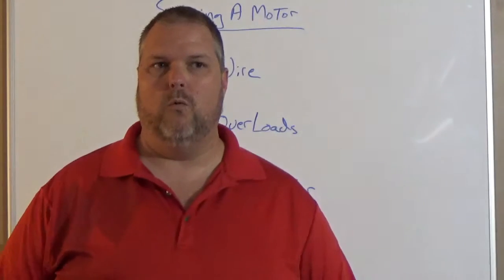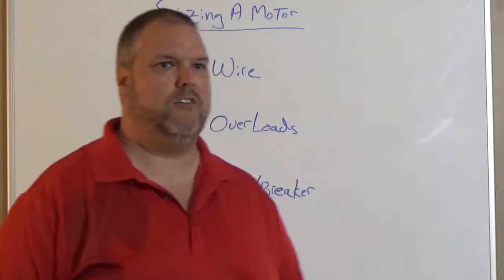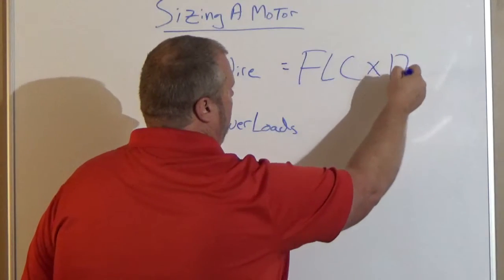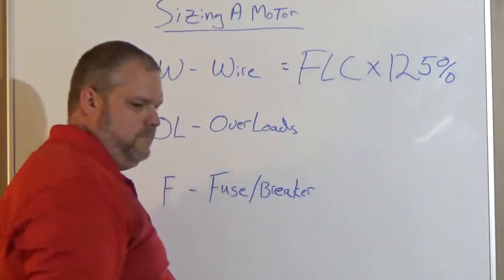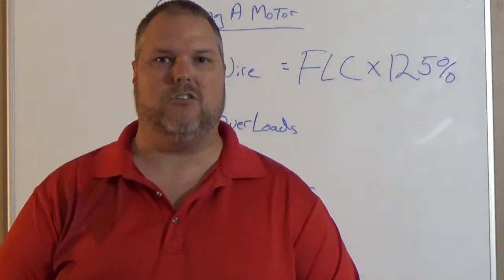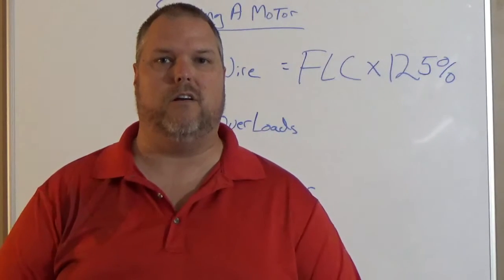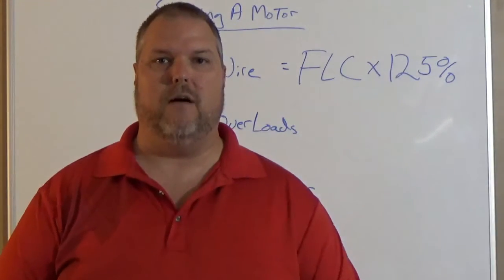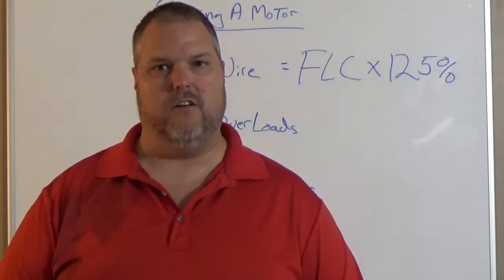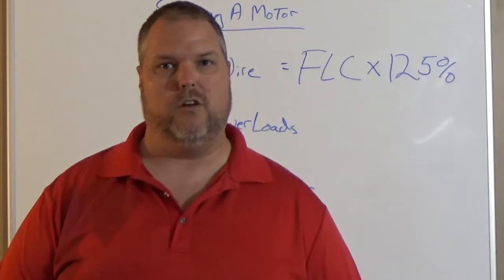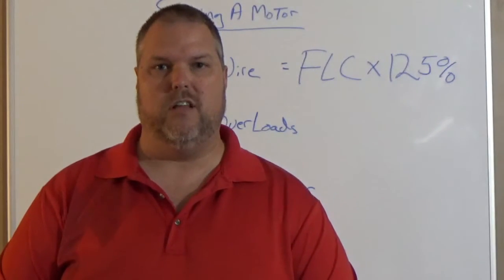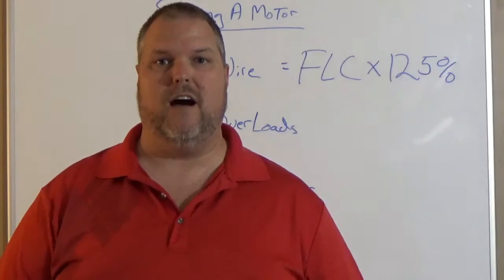We're going to size conductors. We're going to take what's called the FLC and multiply it by 125%. The FLC stands for full load current. I actually worked with somebody who made it easier by calling it the full load code. Makes sense - if I'm finding the FLC, where would I find it? I would find the FLC in the code book. So the full load current is found in the code book. Where do you go in the code book to find the FLC? You open up the code book to 430.247 through 250, and you will find all your information.